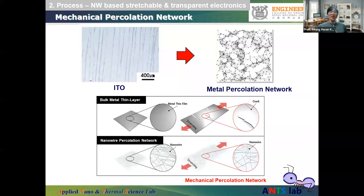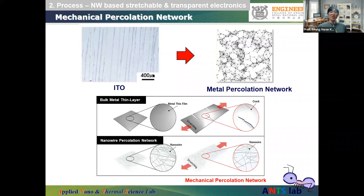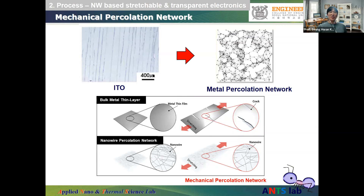As a second processing method for highly stretchable and transparent conductors, a new concept called mechanical percolation network was developed. When a metal thin film is pulled from both ends, it generates cracks, tears apart, and loses electrical conductivity — and is also not transparent. However, when a metal nanowire percolation network is used as an electrode, it can achieve high stretchability and high transparency simultaneously. Compared with a traditional static percolation network transparent conductor, the mechanical percolation network can be highly stretchable while maintaining good electrical conductivity and optical transparency.